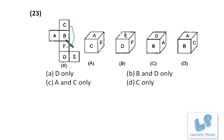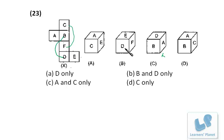Similarly for the next unfolded dice: c is opposite to f, b is opposite to d, and a is opposite to e. Check each option — c and f opposite is possible, a and e opposite is possible, and b and d opposite is possible. Both those positions are correct.